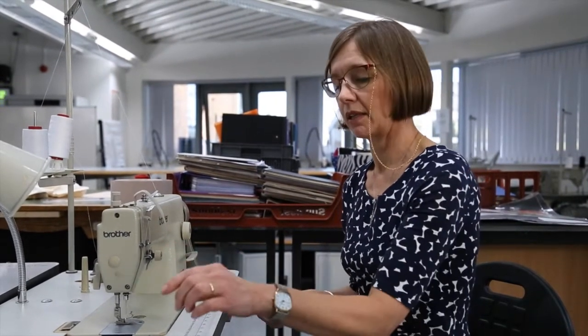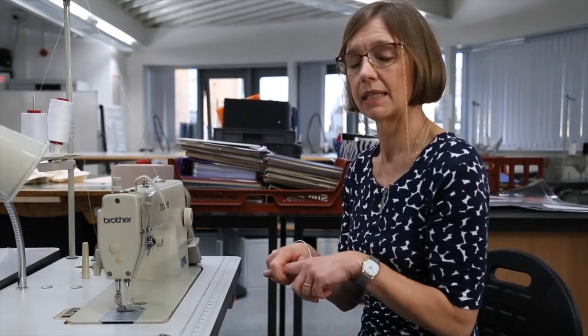These sewing machines are essentially what we call a lock stitch machine and this means that it has two threads which come together in the stitching process. We have one thread coming through the top of the machine and another thread coming from underneath the machine, and then they lock together as they stitch.